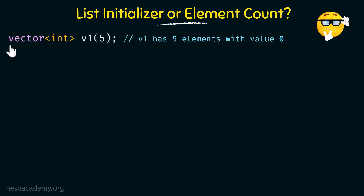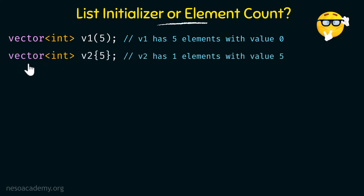First, vector v1 of type integer with 5 in rounded brackets — v1 has 5 elements all initialized to 0 because we have not specified a value. The rounded brackets mean 5 specifies the count. Next, integer vector v2 with 5 enclosed in curly braces — when enclosed in curly braces this means 5 is an element inside v2. So v2 has just one element with the value 5. Notice the difference between these two.